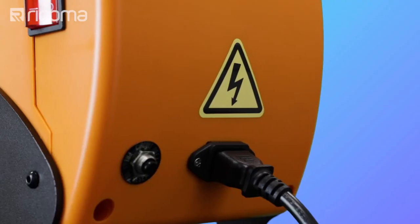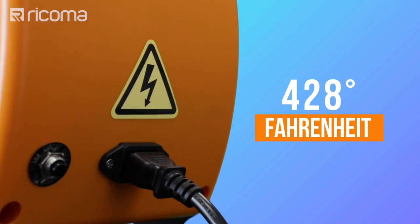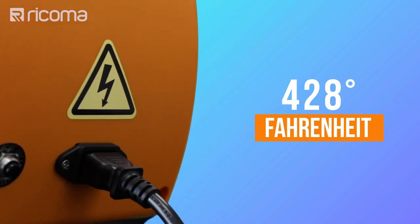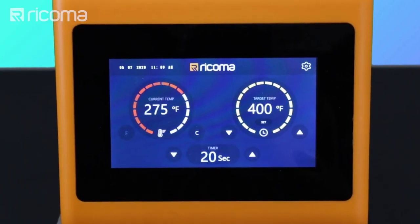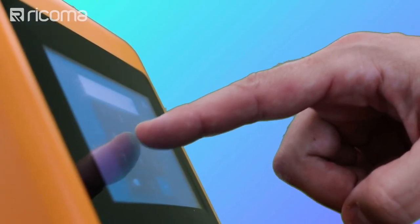The plate heat press can quickly reach up to 428 degrees Fahrenheit, allowing you to press more plates at a faster speed. With its high-tech digital touchscreen, this plate heat press is one of the most advanced machines on the market.